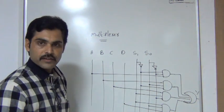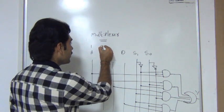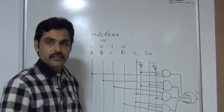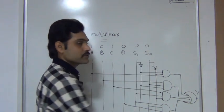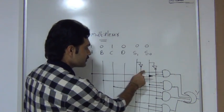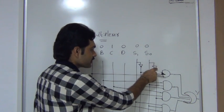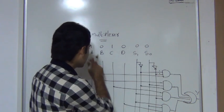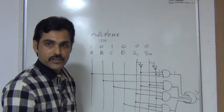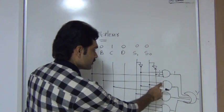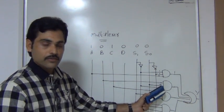Now I will take some values and show how this multiplexer is working. Suppose I keep a=1, b=0, c=1, d=0 — fixing the inputs. Now I will change the selection lines. Initially, I am keeping selection lines 0, 0. If I keep selection line 0, 0, look at the first AND gate output. s1 is 0 so s1 bar is 1, s0 is 0 so s0 bar is 1. You will get 1 here, 1 here, and a is already 1. So 1 AND 1 AND 1, output is 1.